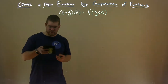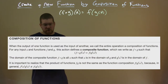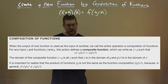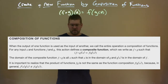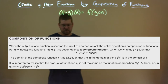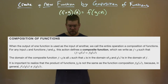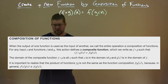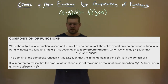So let's go with an example here. Definition — compositional functions: when the output of one function is used as the input of another, we call the entire operation a composition of functions. For any input x and functions f and g, this action defines a composite function, which we write as f of g, such that f of g of x is equal to f of g of x. The domain of the composite function f of g is all x such that x is in the domain of g and g of x is in the domain of f, so it has to have the domains of both. It is important to realize that the product of functions f times g is not the same as the function composition f of g of x, because in general, f of x times g of x is not equal to f of g of x.